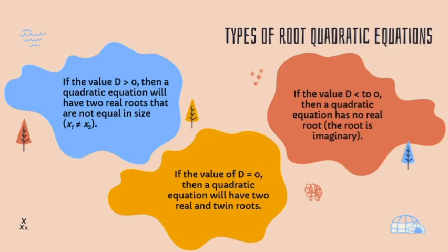And the last topic: types of roots of a quadratic equation based on the discriminant D. If D > 0, the quadratic equation has two real roots that are not equal, x₁ ≠ x₂. If D = 0, the quadratic equation has two real and equal (twin) roots. If D < 0, the quadratic equation has no real roots — the roots are imaginary.